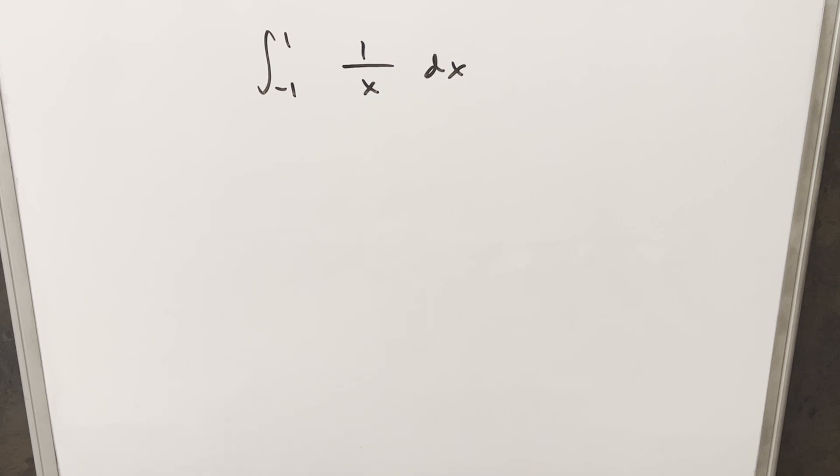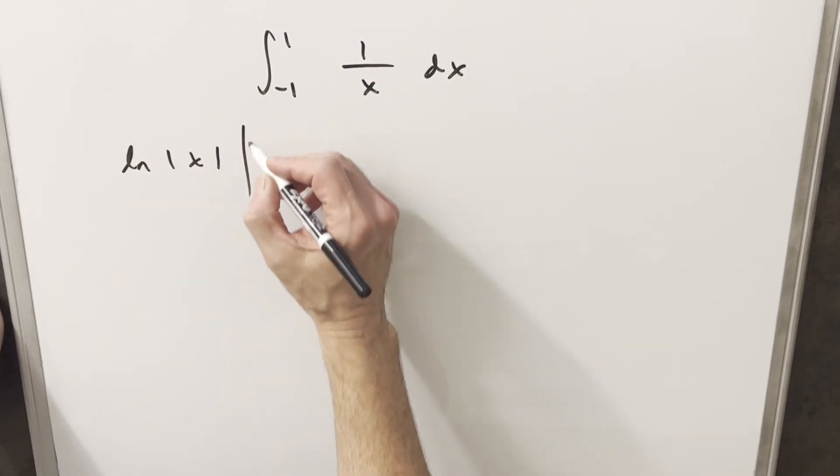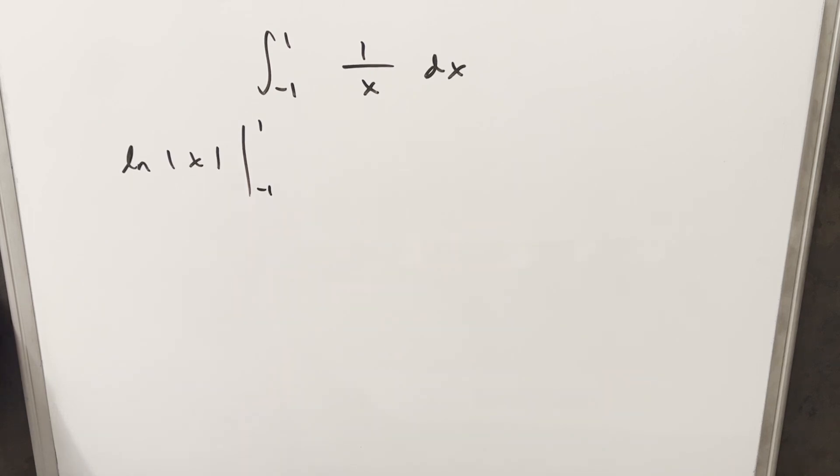And of course, it's a really straightforward integral, but the interesting thing here is the bounds. So let's just go ahead and integrate and see what happens when we evaluate this. So the integral of 1 over x is just going to be natural log absolute value of x. And then we just need to evaluate this from minus 1 to 1.